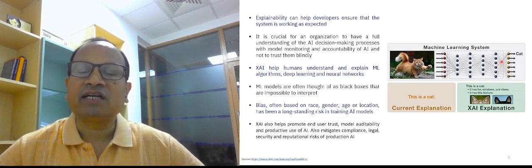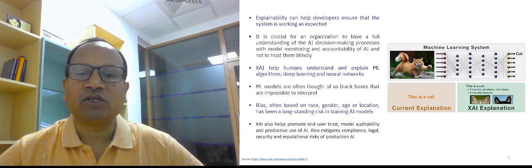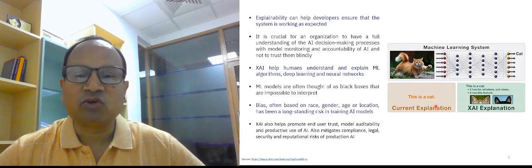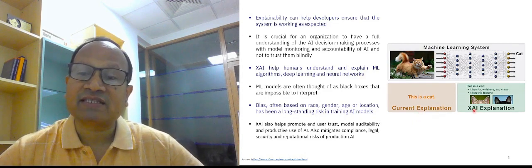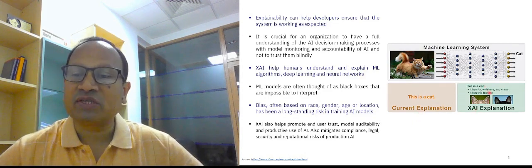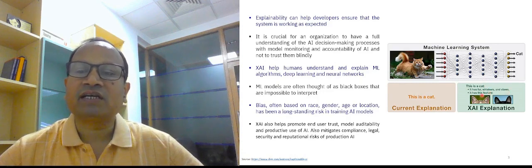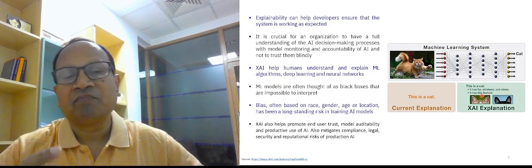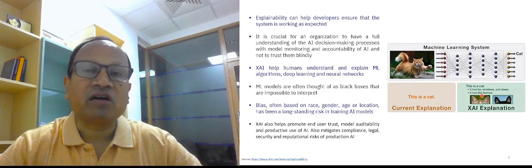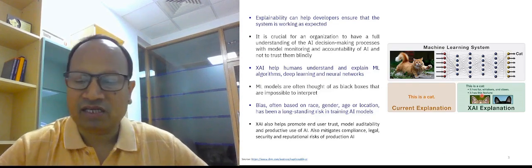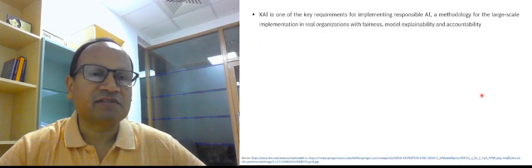This is what is the general ML model. It can identify whether that model is cat or dog. So this is a cat, current explanation. But in XAI, it has fur, it has whiskers, it has claws, it has this feature, that feature. So that kind of more comprehension is developed in the XAI, explainable artificial intelligence.